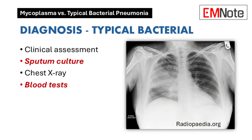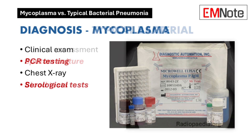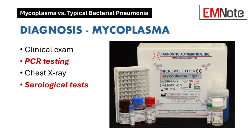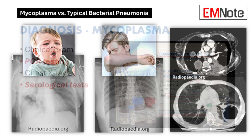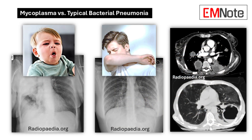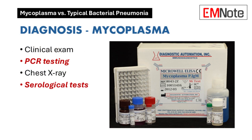For mycoplasma pneumonia, PCR testing has emerged as a highly sensitive and specific method. PCR — polymerase chain reaction — directly detects Mycoplasma pneumoniae DNA from a respiratory sample, providing a very definitive diagnosis. We're essentially looking for the genetic fingerprint, straight to the source. When it comes to chest X-rays, they can provide valuable information, but it's important to remember they don't always offer a clear-cut distinction.